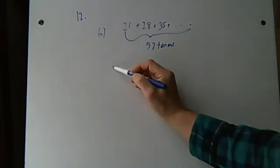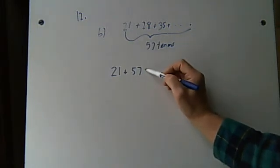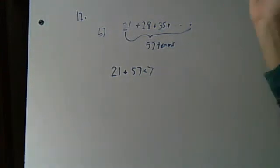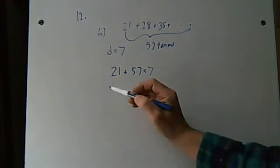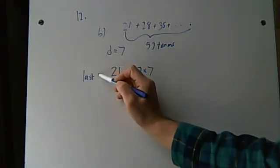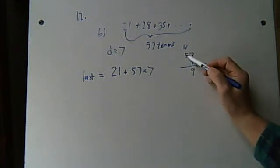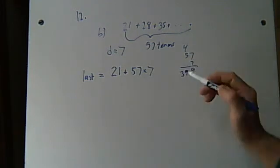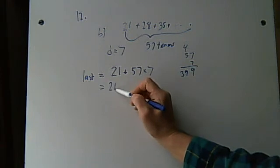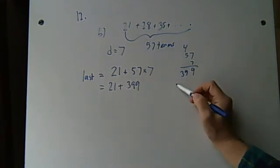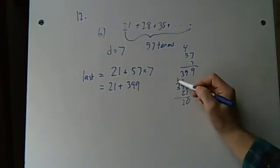The last one is going to be 21 plus 57 times 7. Because 7 is the difference. D equals 7. So the last term, I'll just call it last, equals 57 times 7. 7 times 7 is 49. 35 is 399. Okay? Plus the 21. 399 plus 21. 0, 1, 12, 1. That's 420.